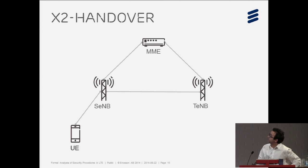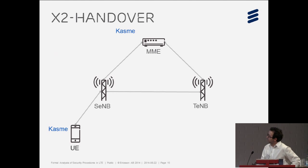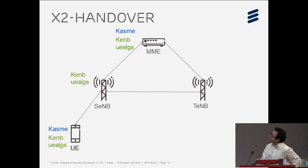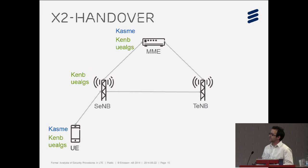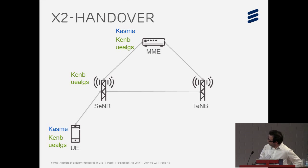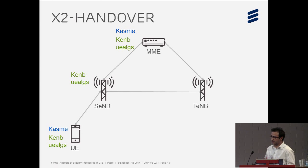The example I'll use to illustrate modeling is the X2 handover procedure, involving four nodes: user equipment, two E-NodeBs, and an MME node. Initially, we assume the MME and the user equipment share a key called KASME, and that those three nodes share KASME and a set we refer to as UE algs — the set of encryption algorithms or capabilities supported by the user equipment. These parameters have been established by earlier procedures, so we assume they are given and ready to use.